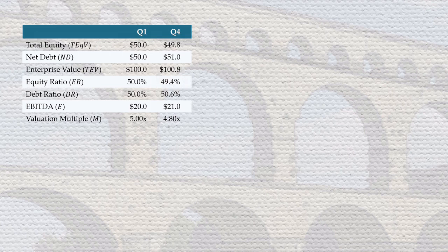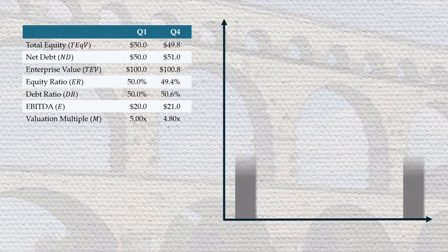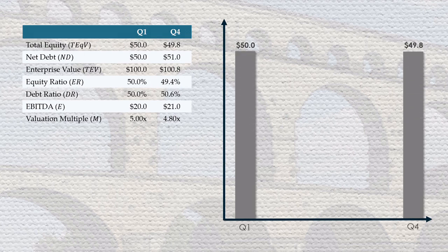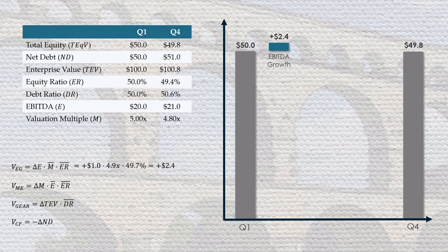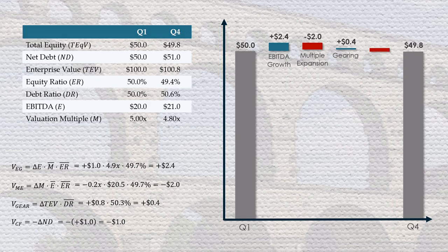Even though the total equity valuation is basically flat, we still have underlying value drivers that are material. At the company level, they can be explained with these equations. EBITDA growth gives us $2.4 million of value, while multiple expansion takes $2.0 million away. Gearing gives us back another $0.4 million, but then we lose $1 million from the company's cash consumption. These values add up to the $0.2 million equity loss.